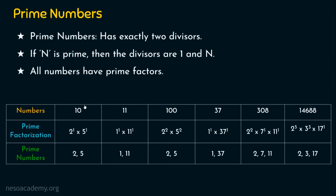Obviously 10 is not a prime number, because 10 can be divided by 2 as well as by 5. So 10 has factors 1, 2, 5, and 10 — it has 4 divisors, not exactly 2. That's why 10 is not a prime number, but it does have prime factors 2 and 5.